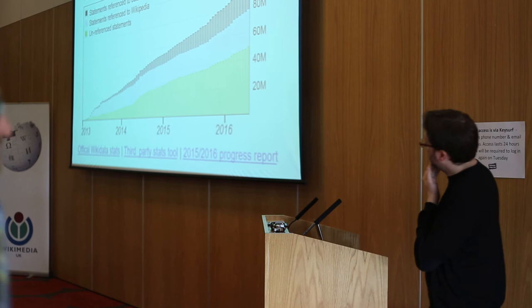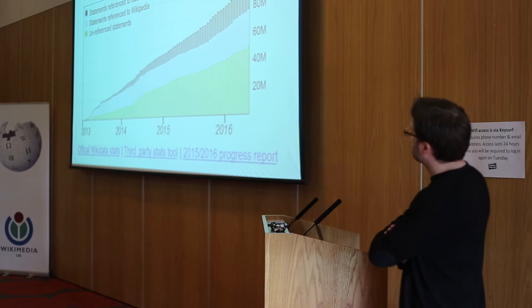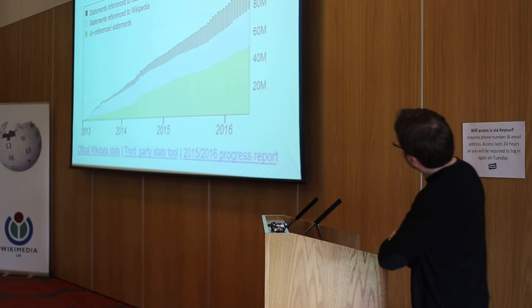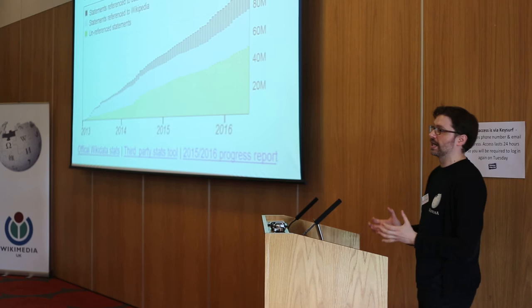We can show the rapid growth of Wikidata in the three or four years it has been around. We now have roughly around 100 million statements, 20 million of which are referenced to outside sources. It looks roughly the same reference rate as Wikipedia, but you can see the rapid growth — a powerful tool harnessing information from about 300 Wikipedias and outside sources, all in the public domain.